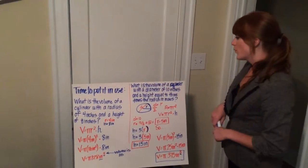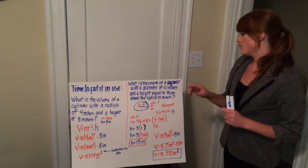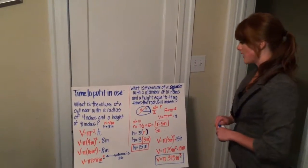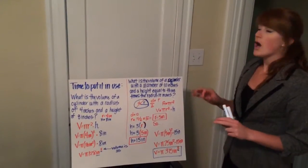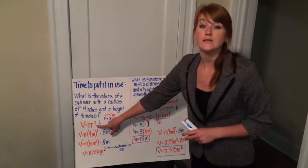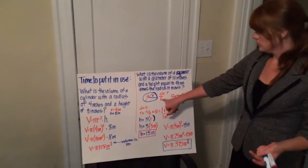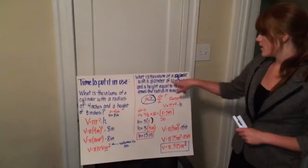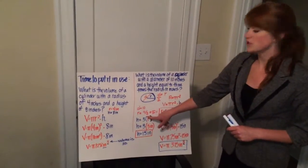Now let's do this problem. What is the volume of a cylinder with a diameter of 10 inches and a height equal to three times the radius in inches? It's a little bit more complicated this time. Let's take it step by step and figure out, first of all, what our radius is, because our volume formula is in terms of radius. Our diameter divided by 2 equals our radius. So if our diameter is 10, then our radius is 10 divided by 2, which is 5.